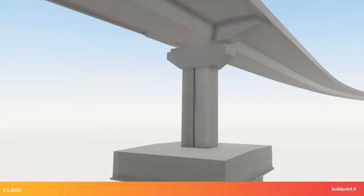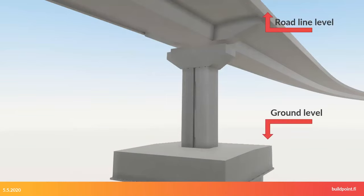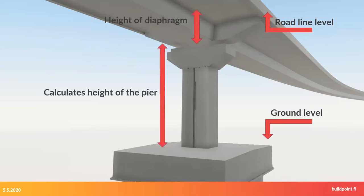Here we have a concrete bridge deck and pier created using this parametric approach. As input parameters, there is a road line level at specific X and Y coordinates, the ground level, and the height of the diaphragm. The algorithm then calculates the height of the pier. If any input parameter changes, then the height of the pier changes accordingly and automatically.